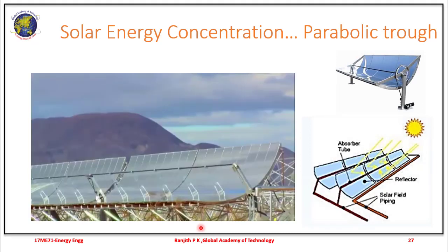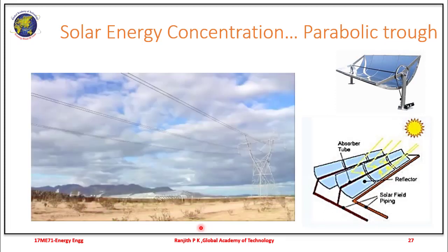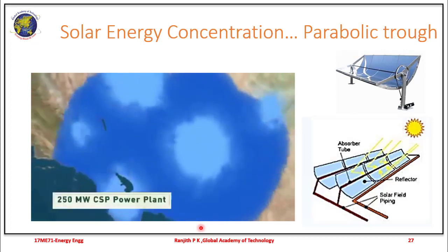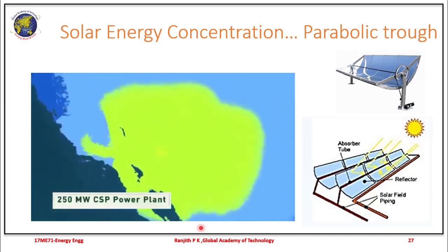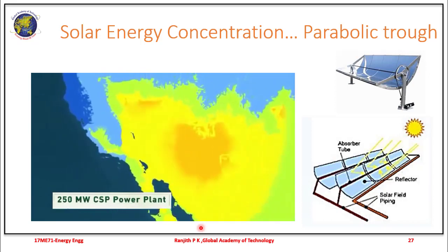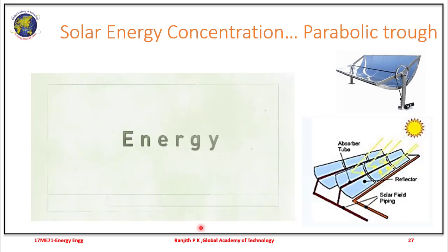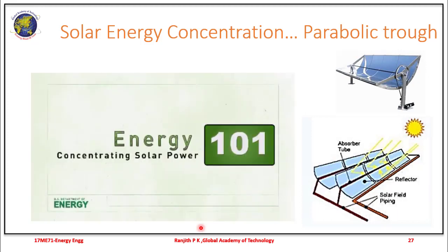Sunny skies and hot temperatures make the southwest US an ideal place for these kinds of power plants. Many concentrated solar power plants could be built within the next several years, and a single plant can generate 250 megawatts or more, which is enough to power about 90,000 homes. That is how the parabolic trough system works.